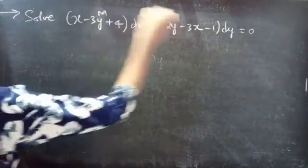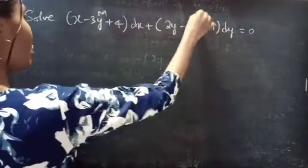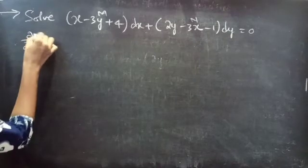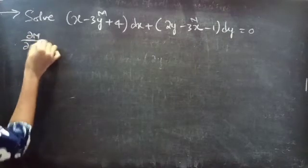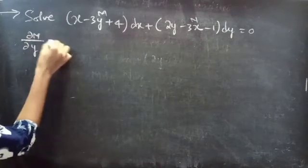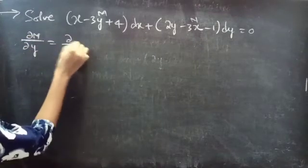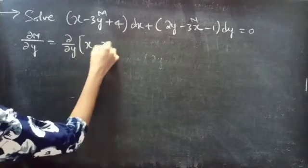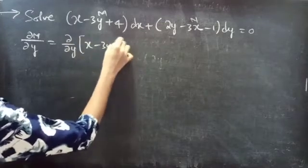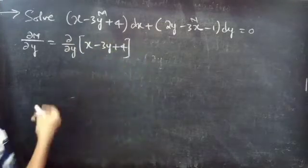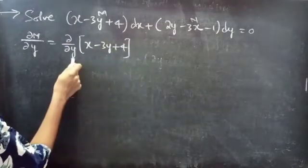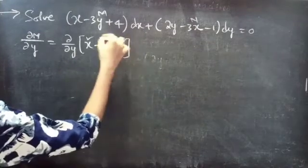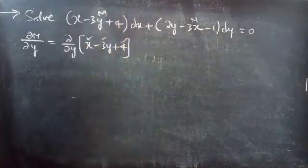This is your M and this is your N. So firstly we are going to find the partial derivative of M with respect to y, for M equals to x minus 3y plus 4. Since we are doing the partial derivative of M with respect to y, x and 4 and 3 are treated as constants.